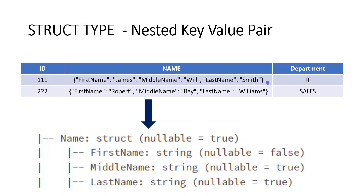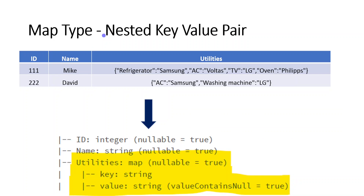But in a real-time project, that is not always going to be the case. For example, one record might contain first name, middle name, and last name. For another record, we might be missing the middle name — so it should be fine to have only first name and last name. But whenever we define the structure using struct type, that is not possible. For that requirement, we can go with map type.